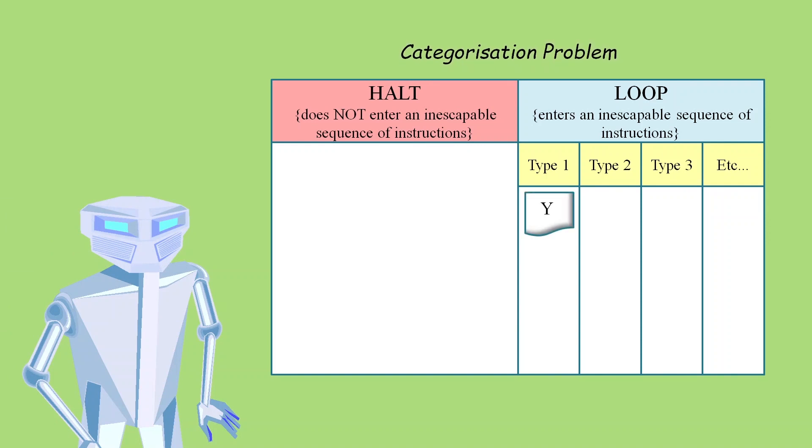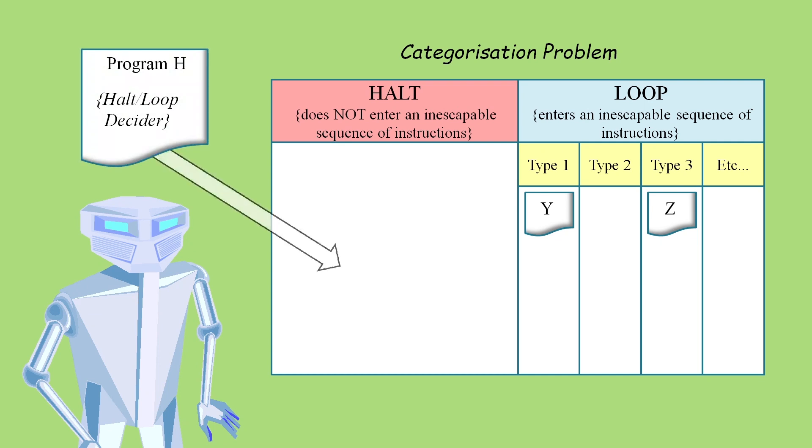A certain program plus its data might be classified as a certain type of loop, whereas another program with its data might be described as a different type of loop. But when it comes to program H, the halt loop decider, we simply say it must halt. We don't specify a specific type of halting. But Tara claims that if we did specify one of these two types of halting just described...